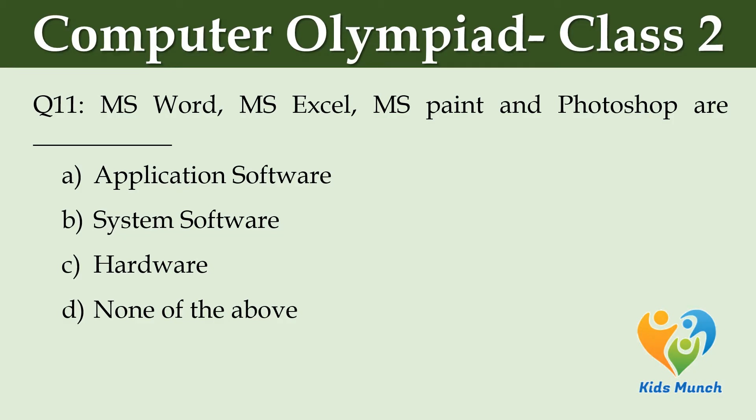MS Word, MS Excel, MS Paint, and Photoshop are dash. Option A: Application Software. Option B: System Software. Option C: Hardware. Option D: None of the above.